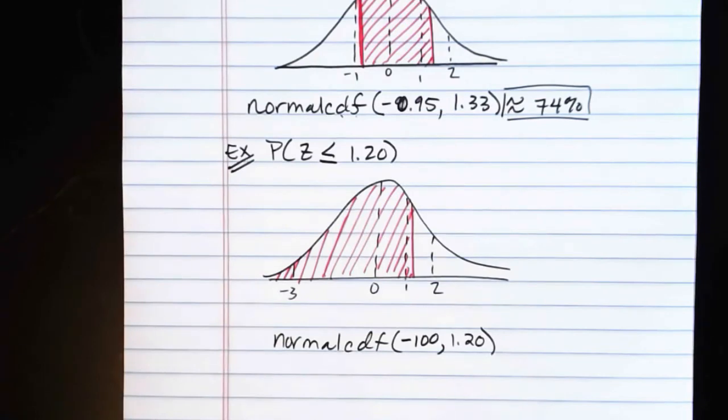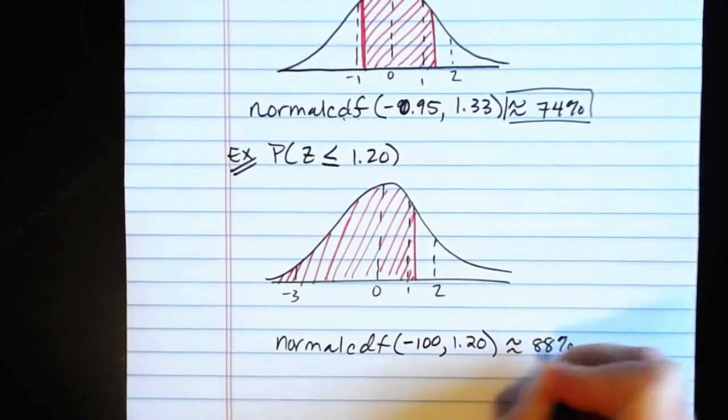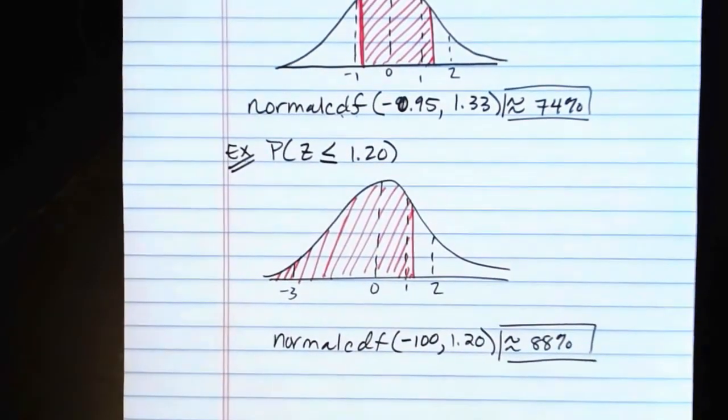And when we do that on the calculator, pick our normal CDF and do negative 100, 1.20, what we find is that we have about 88% under the standard normal curve.